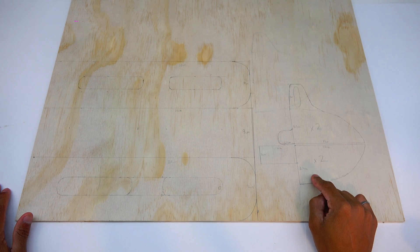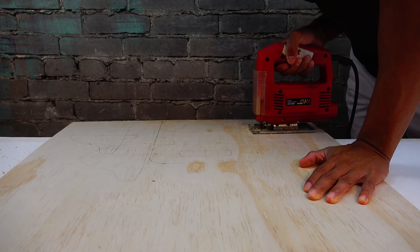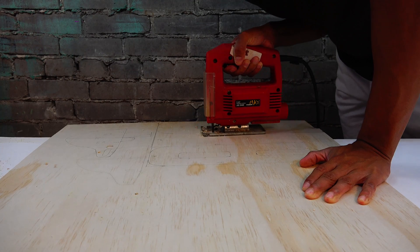Once I've drawn out all the pieces we need we can go over all the pieces and then I'm going to cut them out with this reciprocating saw.